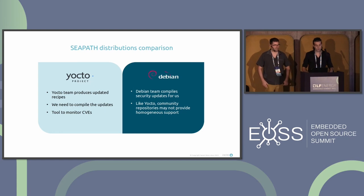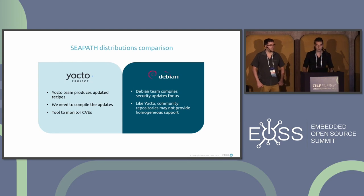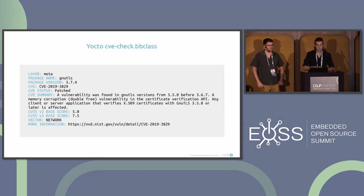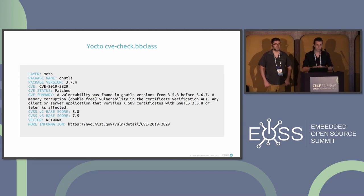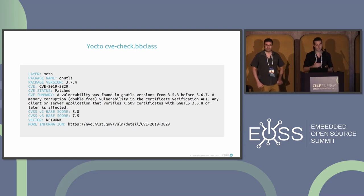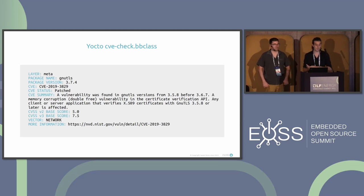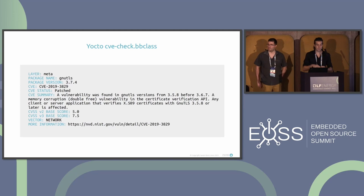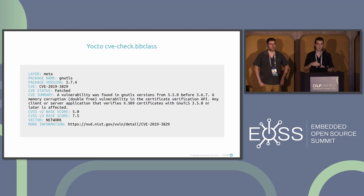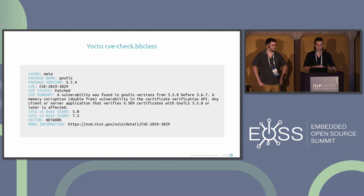With Yocto, more responsibility comes with the flexibility — we must track the CVEs of all our packages. This is done through the cve-check bbclass, which is part of OpenEmbedded Core. It produces a file containing, for every installed package, the currently known CVEs and whether we are affected by them or not. This is done at build time, and with CiPAS we generate that metadata file with every build and check that no new CVE was just discovered.